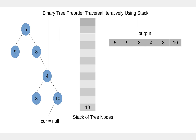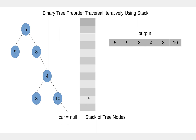Node 10 is not null, so we process 10, add 10 to the stack, and move to the left child of 10. Current is null, so we pop the node from the stack and move to the right child. Current is null and the stack is empty, so that's the end of the pre-order traversal.